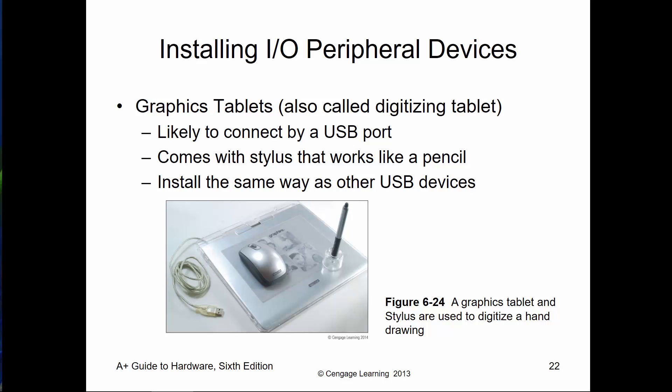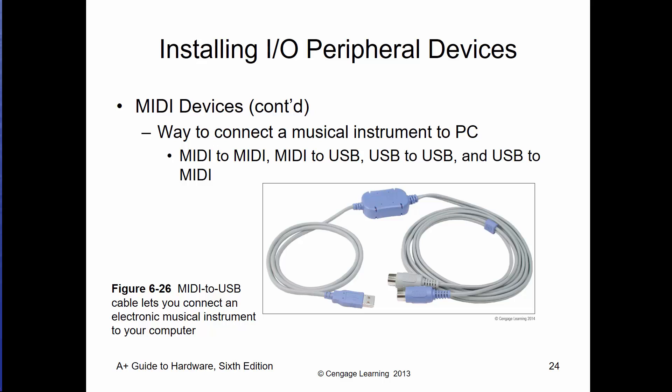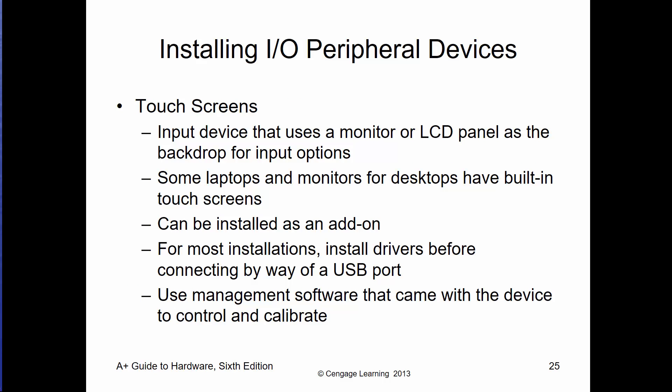A graphical tablet gives you a pen input, which is helpful for tasks like Photoshop or drawing. MIDI and musical devices are slowly being replaced by USB as more audio equipment comes standard with USB. Touch screens allow a monitor to also act as an input device — smartphones and point-of-sale systems are good examples, typically connecting via USB.